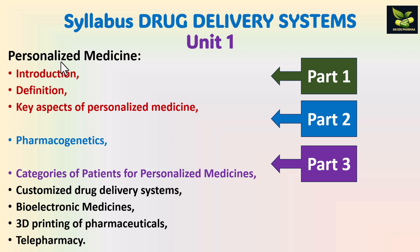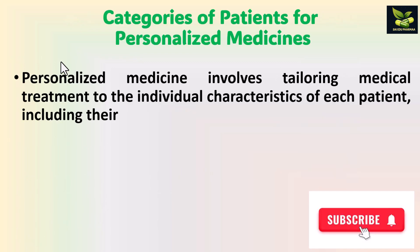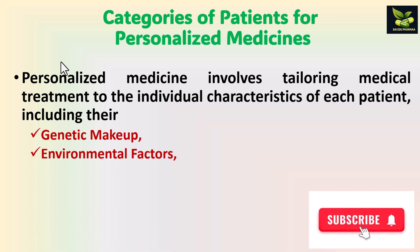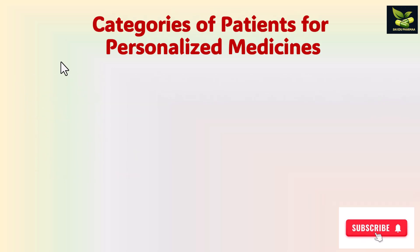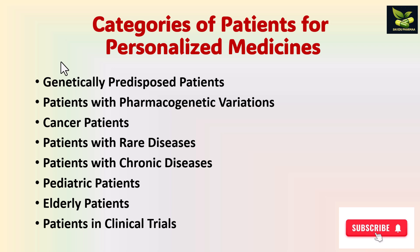In today's video, we are going to discuss various categories of patients for personalized medicines. The personalized medicines involves tailoring medical treatment to the individual characteristics of each patient, including their genetic makeup, environmental factors, and lifestyle choices. According to these factors, the tailoring of medicines or therapies is undertaken.